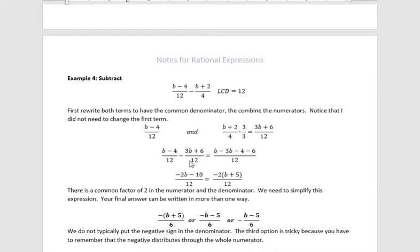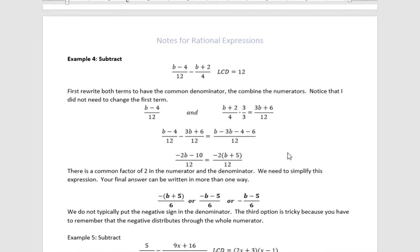And now I can combine those two because they have the same denominator. But remember when you do that, you want to distribute that negative sign through there. So I have b, and then I have minus 3b, and then I have minus 4, but I also have minus 6. Remember that negative sign goes all the way through. When I add those together, I get negative 2b and negative 10.